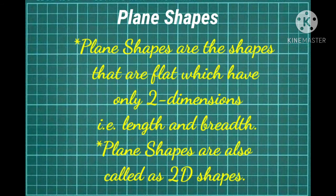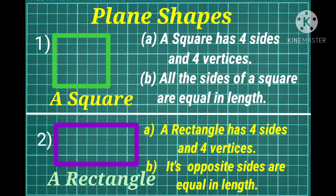Now let's study about the plane shapes. First of all, let me explain you which are called as plane shapes. Plane shapes are the shapes that are flat which have only two dimensions, i.e. length and breadth. Plane shapes are also called as 2D shapes.